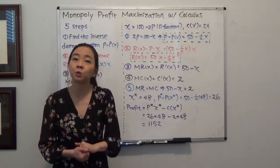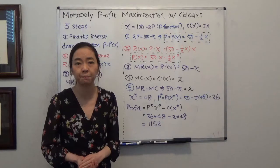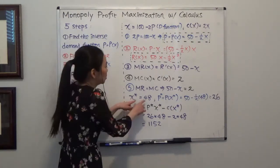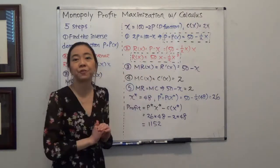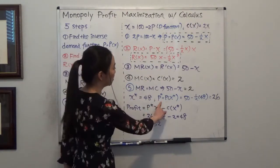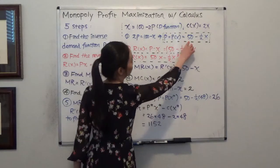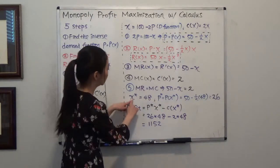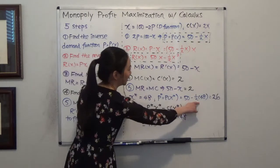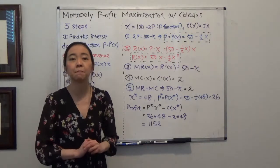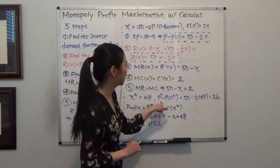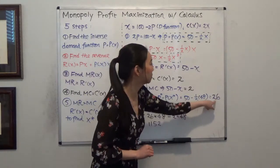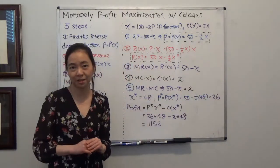Now if the question also asks what the profit-maximizing price is, you just plug x-star back into the inverse demand function. My price equals 50 minus one-half times x, so I plug in x-star equals 48. That gives 50 minus one-half times 48, which is 26. So the profit-maximizing price is 26.